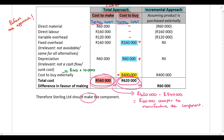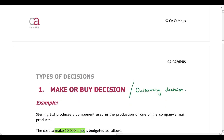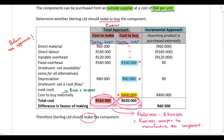With the incremental approach, instead of two calculations we perform one calculation, and we only take relevant costs and relevant revenues into account — we ignore everything that is not relevant. If the required specifically asks for the incremental approach you must use it; otherwise, if silent, pick whichever approach you prefer.